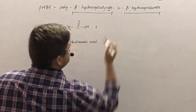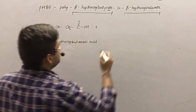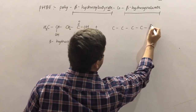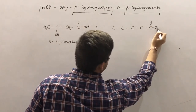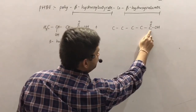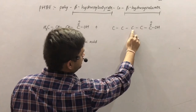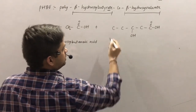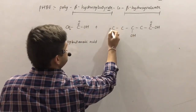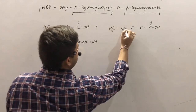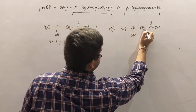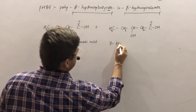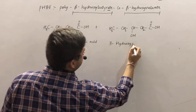The next molecule is beta-hydroxyvaleric acid. 'Valer-' indicates 5 carbons: 1, 2, 3, 4, and 5. Carbon 1 is COOH (carboxylic acid), the functional group carbon is followed by the alpha carbon and then the beta carbon. The beta carbon again has a hydroxyl group (OH). Fulfilling the valencies: CH3, CH2, CH, CH2. The IUPAC name of this molecule is 3-hydroxypentanoic acid.